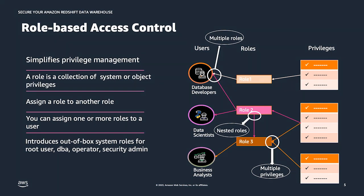Let's start with role-based access control, aka RBAC. RBAC is a very powerful feature. It allows you to systematize your management of user permission and access. For example, suppose we have a role called role 1, which has been granted a system privilege A and object privilege B. Now you can just grant this role 1 to one or more users. All these users can perform the tasks which are specified by privilege A and B, and all the actions of this user are now monitored by roles.